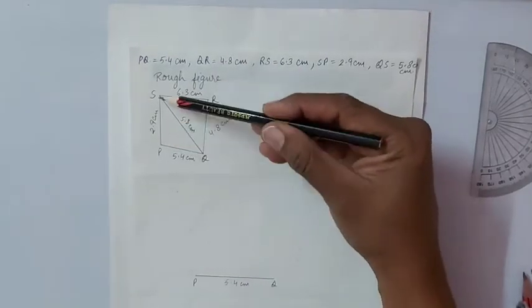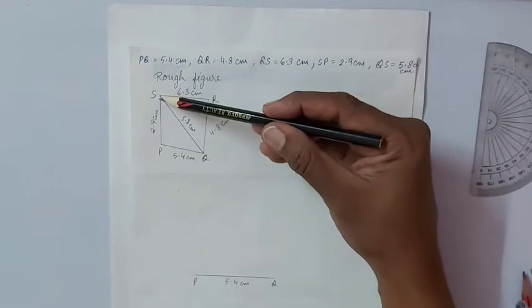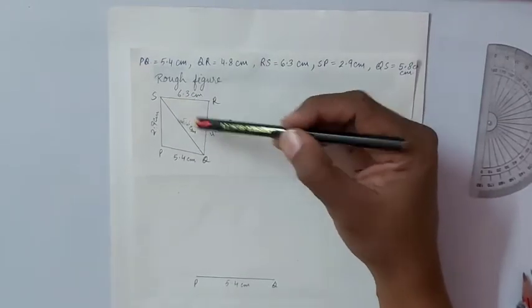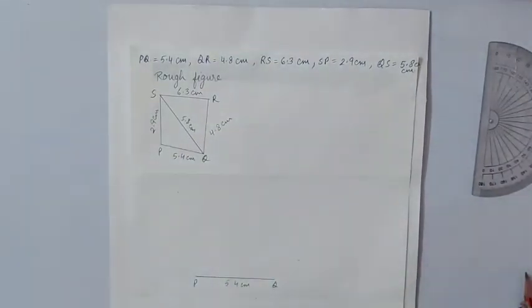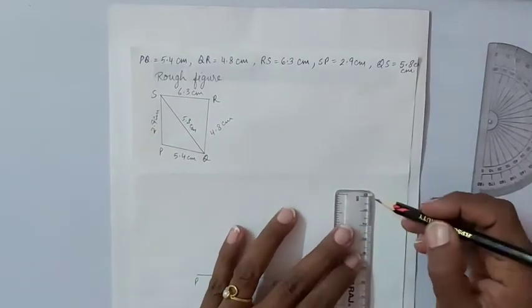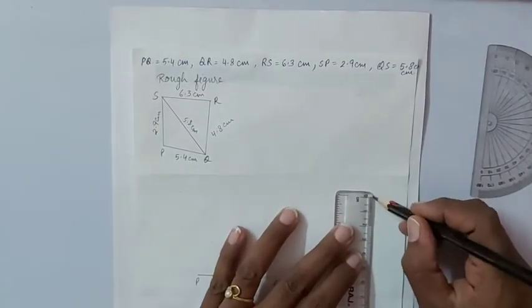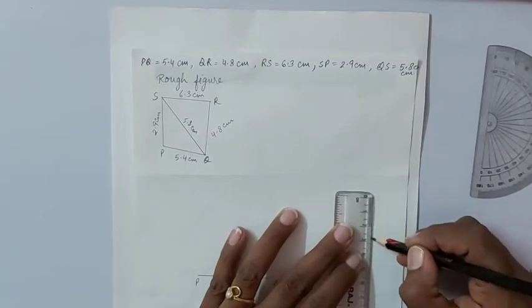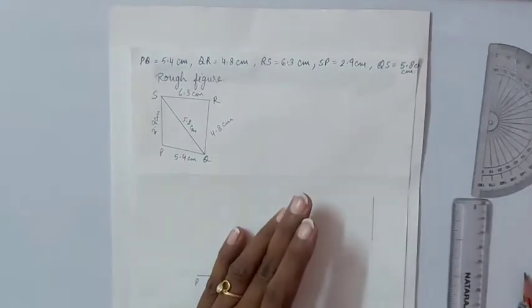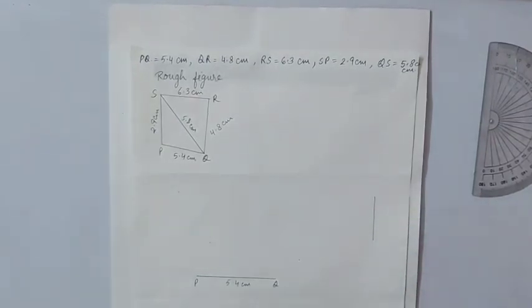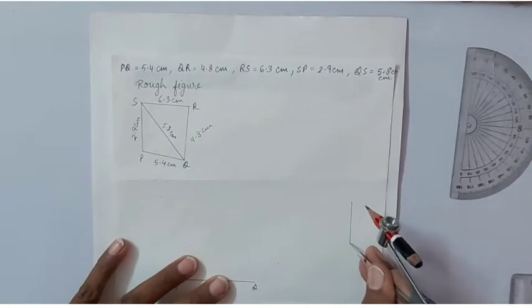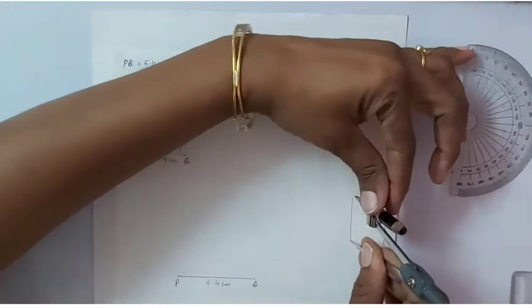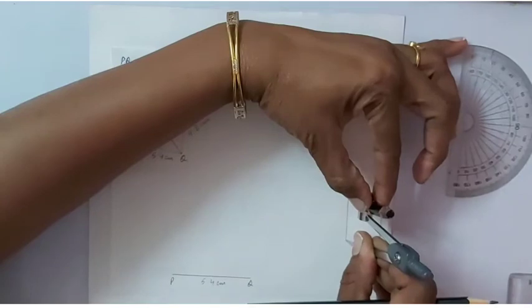Now we need to draw PS that is 2.9 centimeter and QS that is 5.8 centimeter. For PS we will draw a line aside or mark two points at 2.9 centimeter distance. Then keeping the compasses on one point, we will take the radius up to the second point.